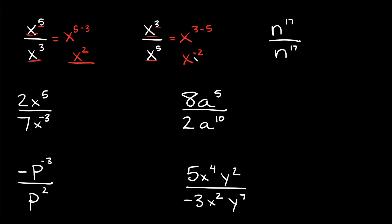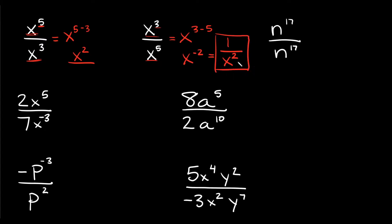Now, how do you deal with a negative exponent? Well, that's not too bad. All you have to do is write it as a fraction by putting it under 1. So we're going to have 1 over x. The only difference is your exponent becomes positive when you put it down here. So x to the negative 2 is equal to 1 over x to the positive 2 — that would be your simplified answer.